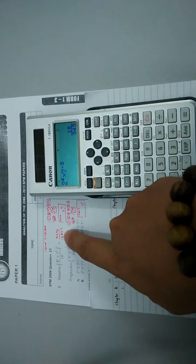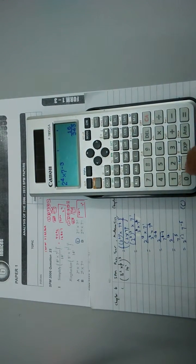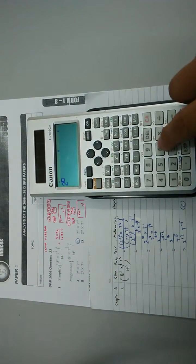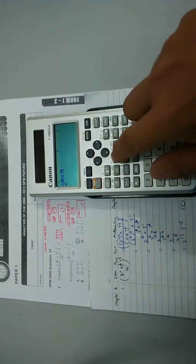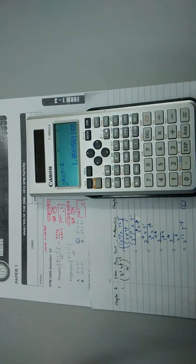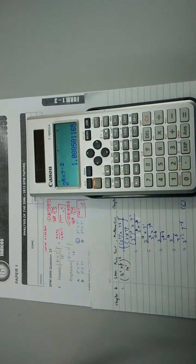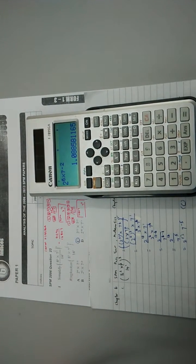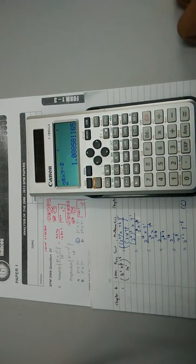Not 4096 over 16807. 2 to the power of 6 multiply with 7 to the power of negative 2, and it's too small a value until the calculator cannot show it.